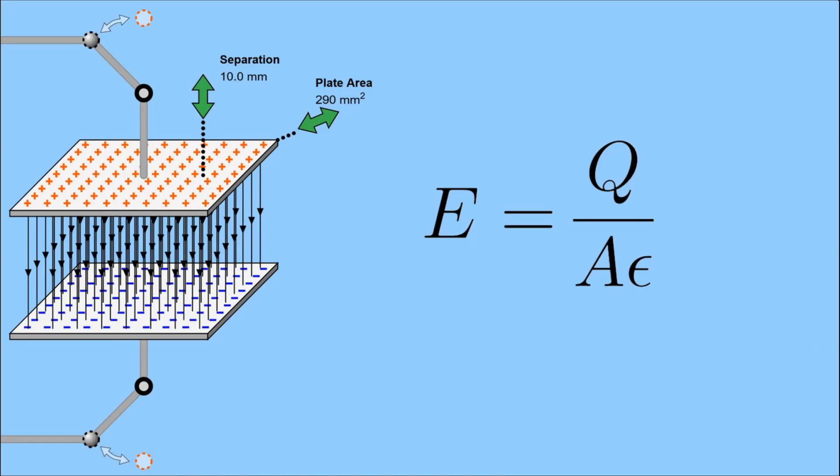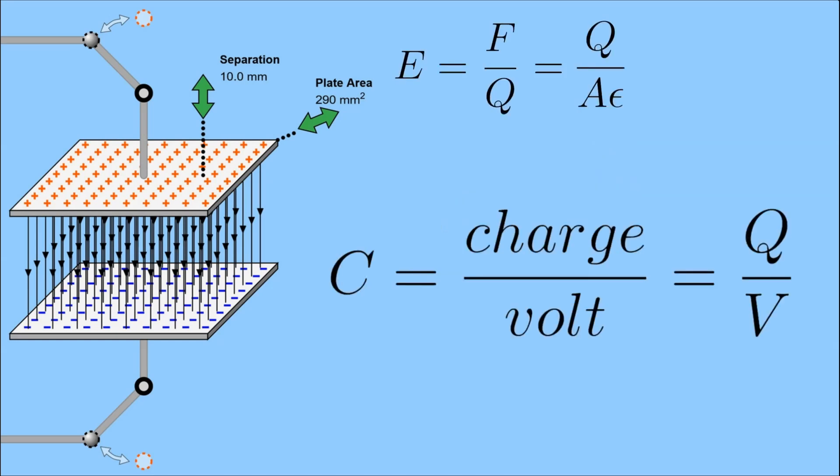Remember, what I'm trying to do is figure out what the capacitance of a parallel plate capacitor is based solely on the physical characteristics of the capacitor. Let's remind ourselves what capacitance is. It's the amount of charge that you can get onto the capacitor for each volt of push that you apply to the capacitor.